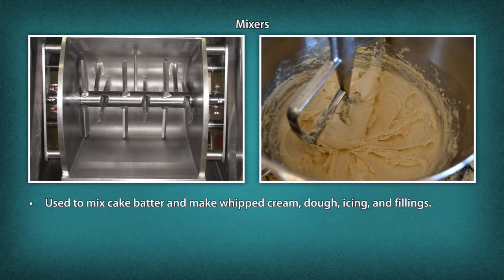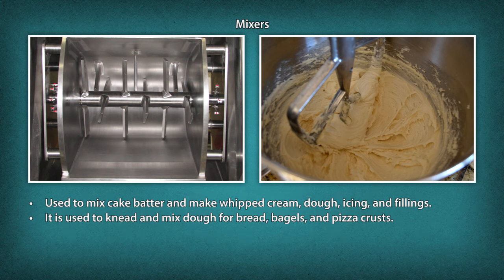Mixers: used to mix cake batter and make whipped cream, dough, icing and fillings. There are two types of bakery mixers — planetary and spiral. A planetary mixer's mixing arm is set in a planetary motion without motion of the bowl and is used for all products. In a spiral mixer, the bowl rotates and the hook spins at the same time while kneading the dough in a spiral manner. It is used to knead and mix dough for bread, bagels and pizza crust.